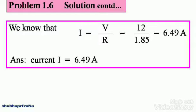We still need to find out the supply current. We know that I is equal to V by R, which is 12 divided by 1.85, which gives you 6.49 amperes. So, you can note down the second part of the answer. The current I is equal to 6.49 amperes.